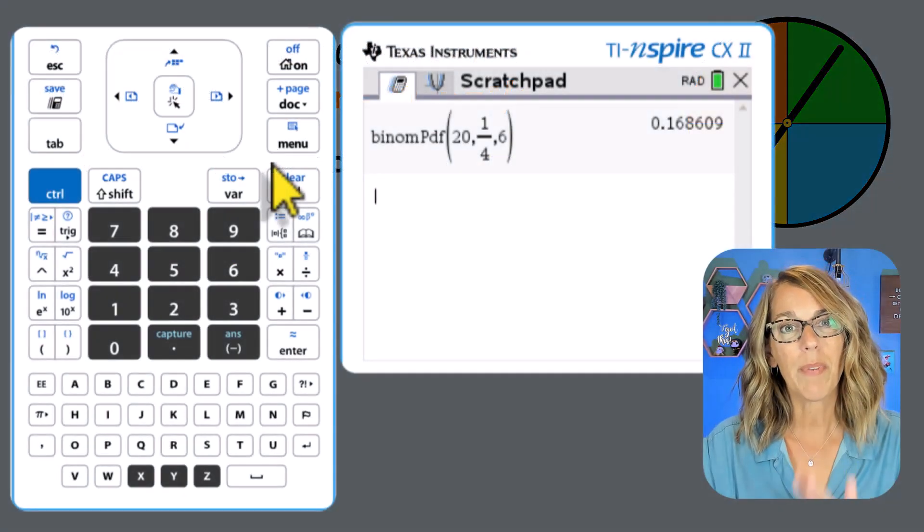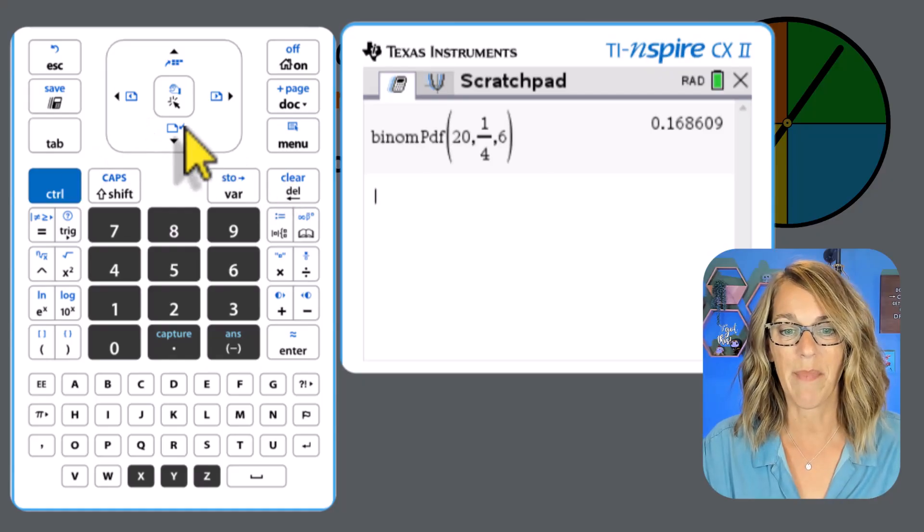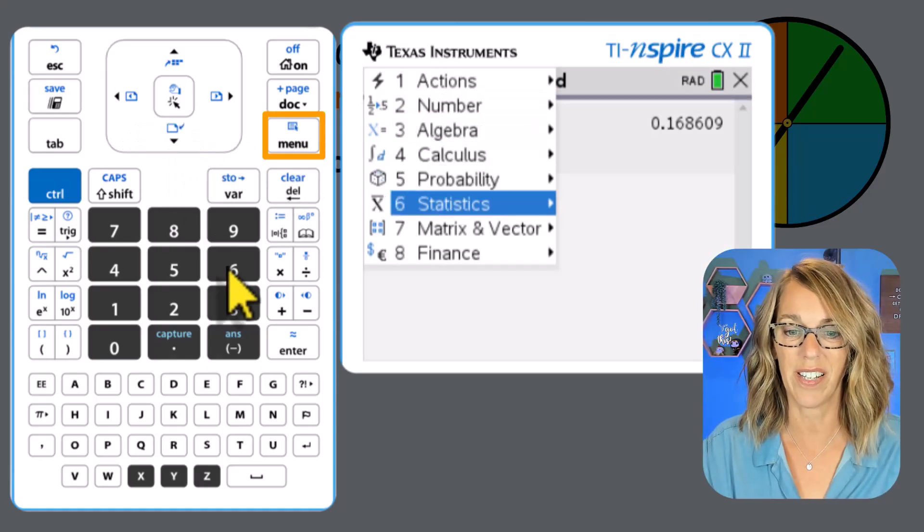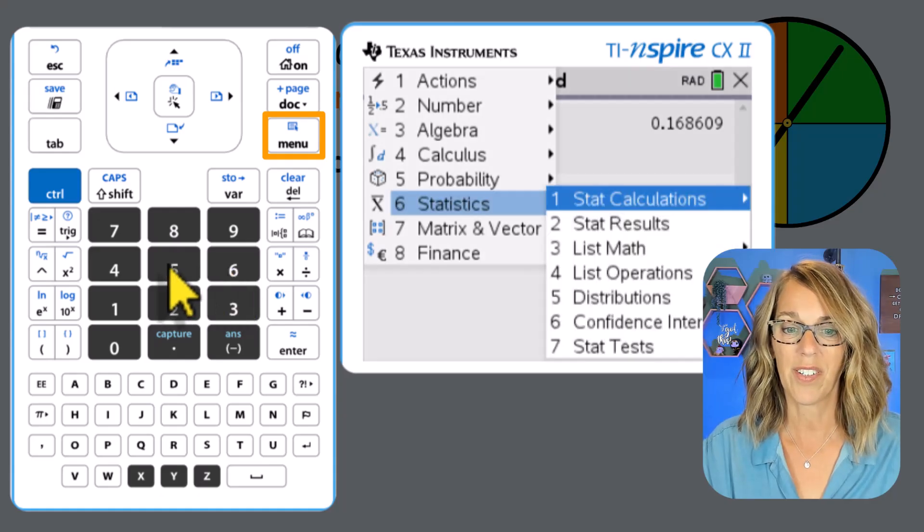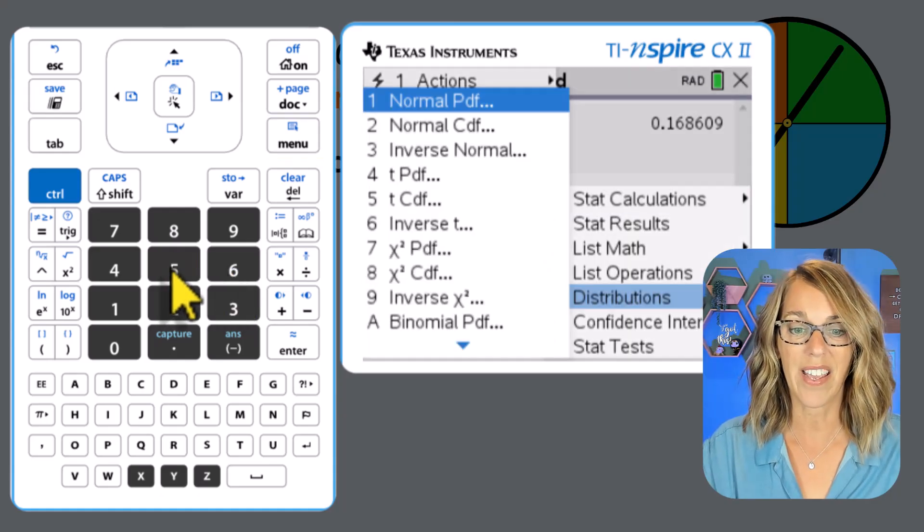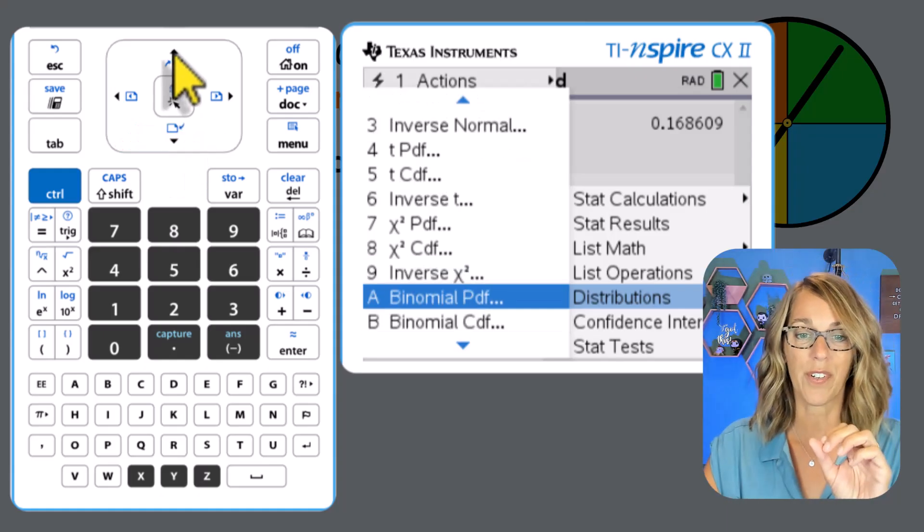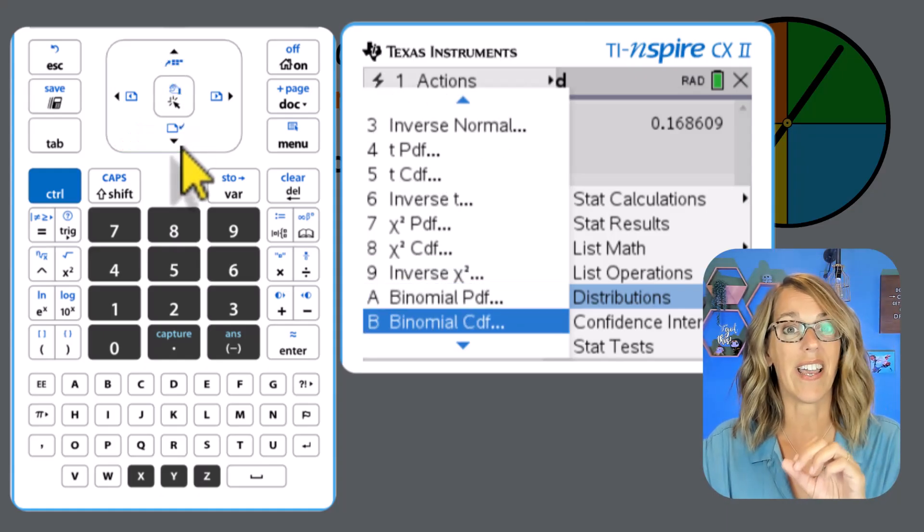I'm going to do that binomial PDF one more time. And to get there, we go menu, and then we're arrowing down to statistics, which is number six. We want distributions, which is number five. And we want that binomial PDF. I'm going to show you this one first, and then we'll do the CDF second.